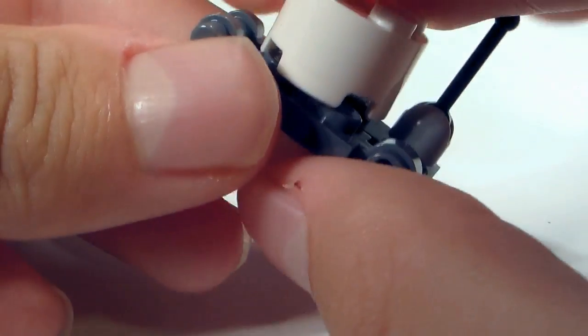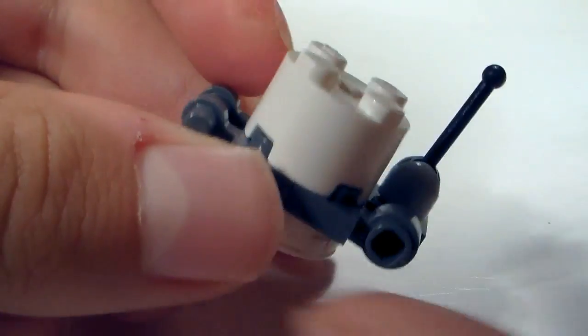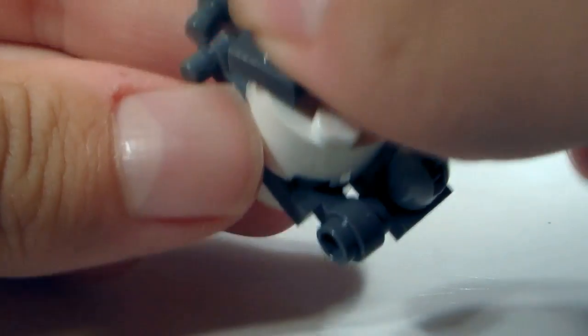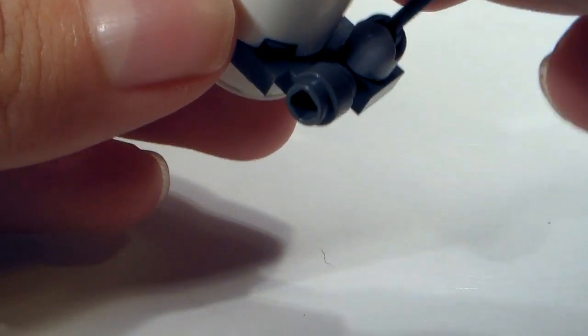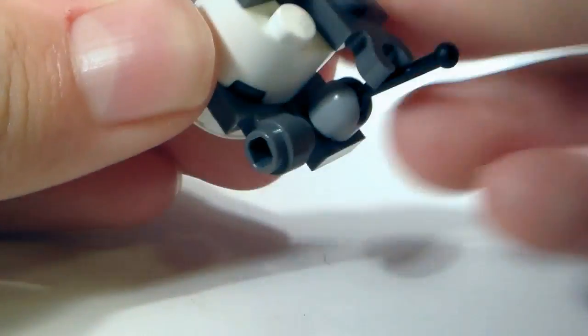And then you're going to take this rounded 2x2 brick and put that on top of that. And then basically do the same thing up here except instead of that 1x2 plate you're gonna use this clip. Right here. And then the same piece up here.